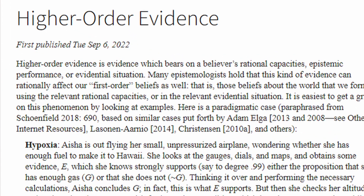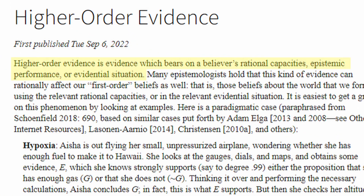So what's higher order evidence? Well, if you go to the online Stanford Encyclopedia of Philosophy, they have an excellent article on higher order evidence. It says: higher order evidence is evidence which bears on a believer's rational capabilities, epistemic performance, or evidential situation. Basically, higher order evidence is evidence about our ability to properly understand first order evidence. It does not directly relate to the issue, but instead is related to our ability to properly think about the issue. So let's say I suffer from frequent hallucinations — I say there's a tree in front of me because I see it, and so I find myself doubtful about my first order evidence because I have higher order evidence that I can't trust what I see.